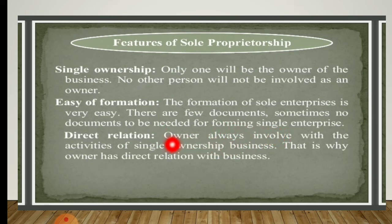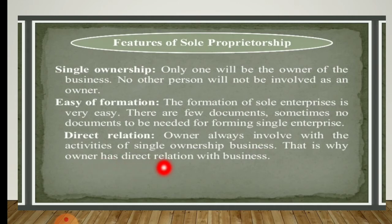Direct relationship is the third feature. The owner is always involved with the activities of the sole ownership business — that is why the owner has a direct relationship with the business. This feature also enables a person to take quick decisions. Since he alone is involved in the business, quick decisions can be taken — he need not consult anybody else.